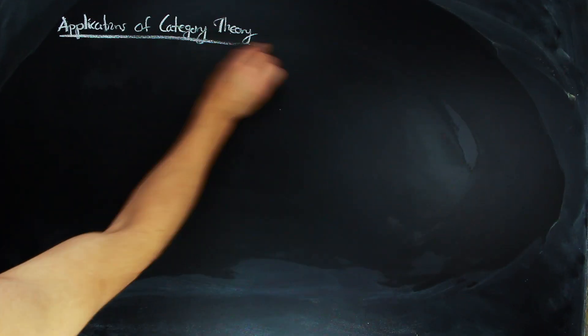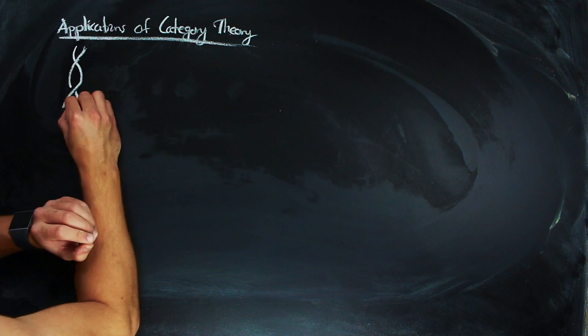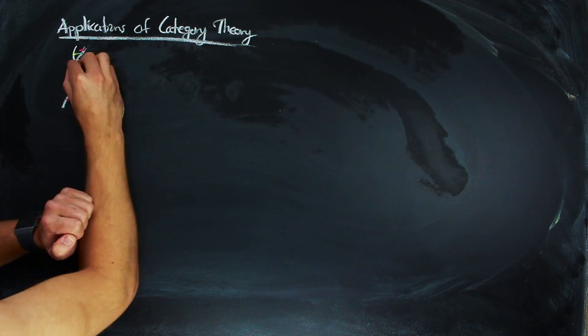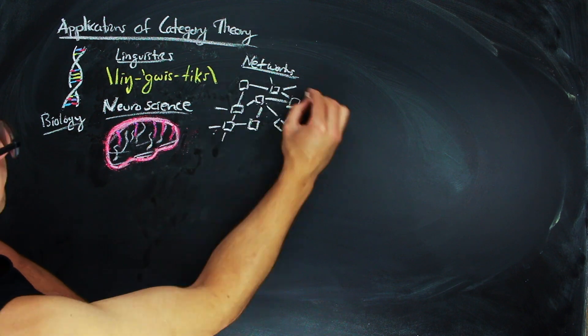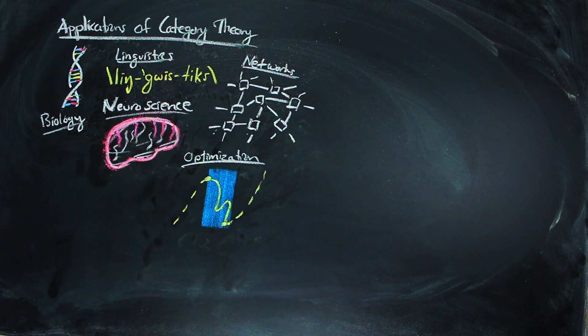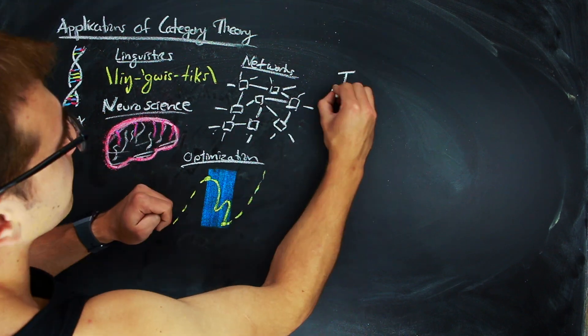So we have categories, and we have functors, and you're probably at the point of, why do we care? Categories can be used to study a plethora of different areas, including biology, linguistics, neuroscience, networks, and different optimization problems. In computer science specifically, there are many direct applications because there is the programming language Haskell.